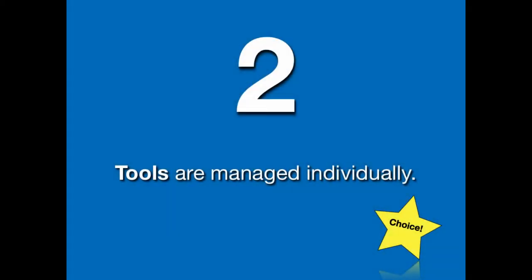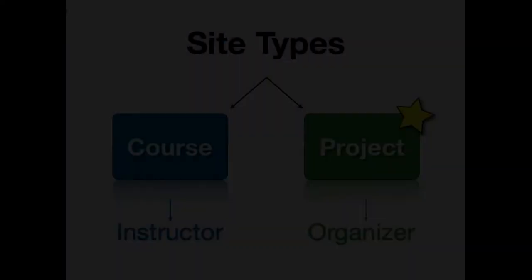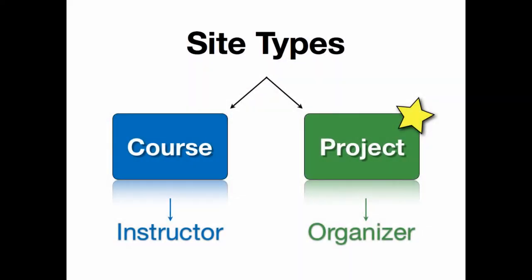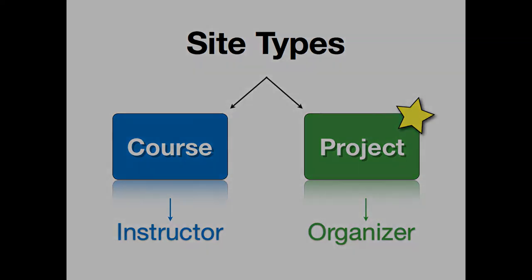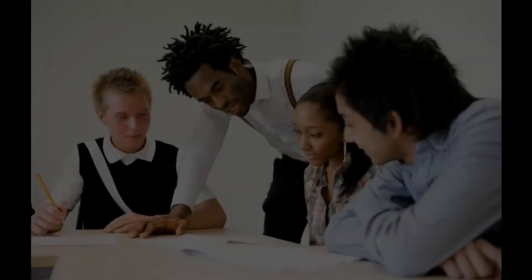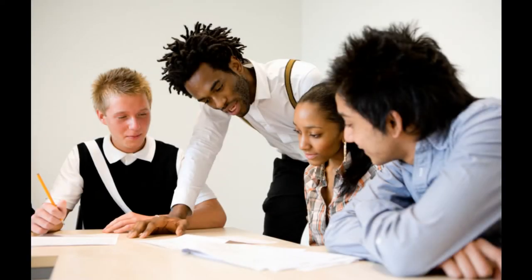Tools are managed individually at the tool level and you have choices. In Sakai there are two types of sites: course sites and project sites. They are nearly identical. Project sites, however, do not contain assignments, tests and quizzes, or the gradebook tools because they are primarily for collaboration.